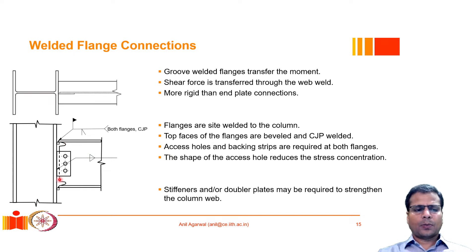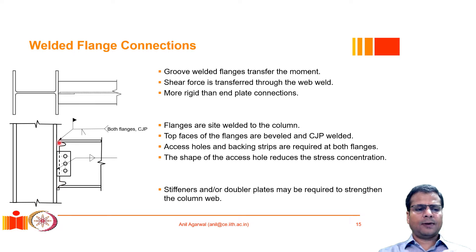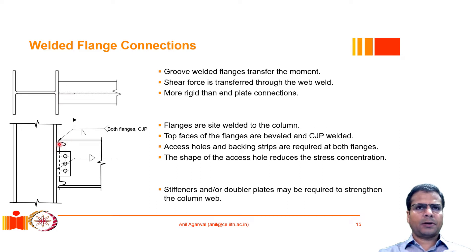Access holes are required at both sides. Because of the presence of the web, it is very difficult to take the electrode all the way from one side to the other. The web prevents movement of the weld from one side to the other. Therefore, to develop a continuous groove weld, a small hole is cut so the welder can weld from one side through to the middle and then complete from the other side. An access hole is also needed when providing a backing strip, which may be required when the gap is too large; the backing plate must be tack welded to the beam.